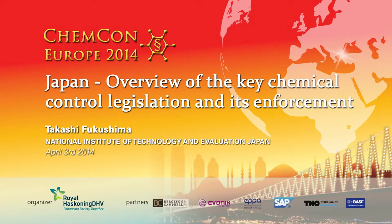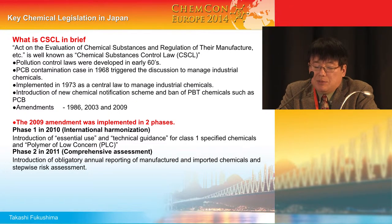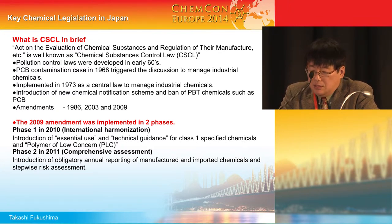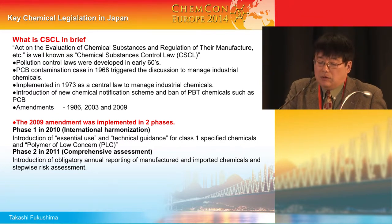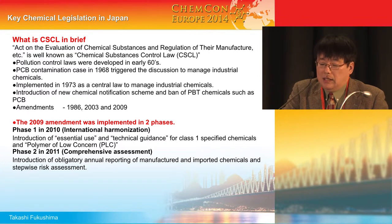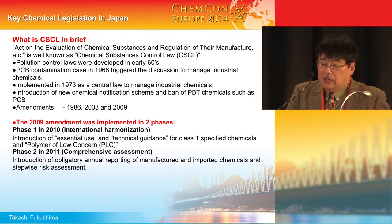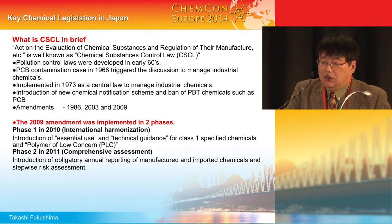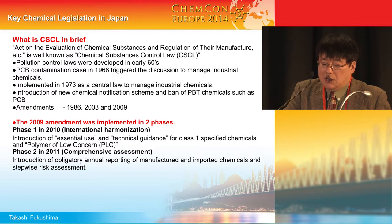The development of this law was triggered by the PCP contamination case in the later 1960s. Government recognized the need for general control of industrial chemicals at that time. The implementation of the law was established and entered into force in 1973, so it was a relatively old law. After that, it was revised several times.